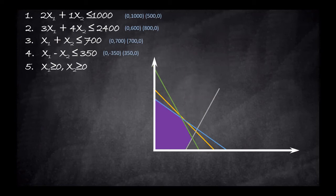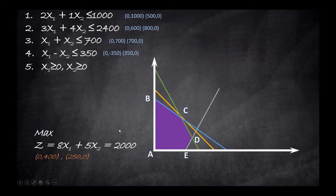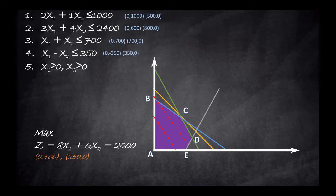We will find the optimal point at one of the corner points. Let's label the corner points, then bring in our objective function. I chose an arbitrary profit of $2,000 and plot that isoprofit line. To maximize profit, I move that line parallel to itself until it touches the last corner point on the feasible area. The last point I can touch at the highest profit is point C — so point C is our optimal point.